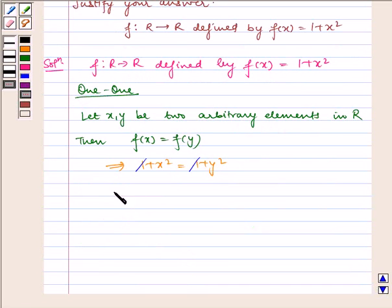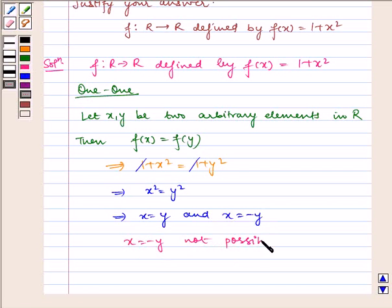So we are left with x² = y², which implies x = y and x = -y. x = -y is possible, therefore f is not one-one.